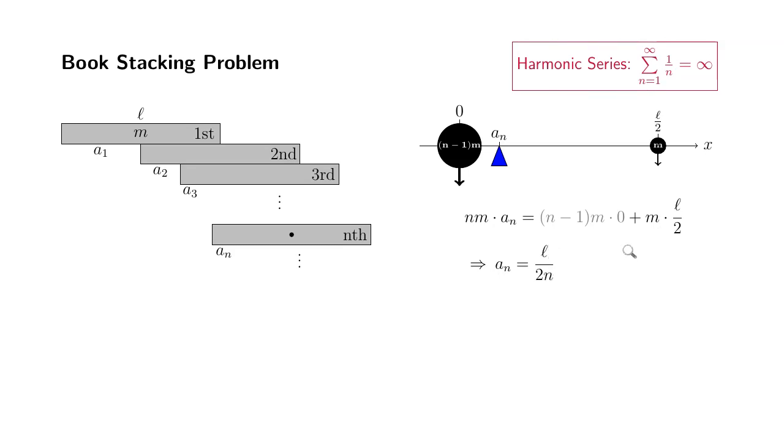So let's make sure that this formula makes sense. For example, n equals 1, you get L over 2. So we know that A1 is L over 2. And when n equals 2, it's going to be L over 4. And you can see that A2 is actually L over 4 too. So it seems like this formula is working. So let's find the total overhang.